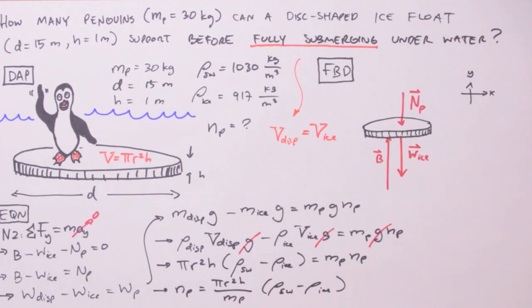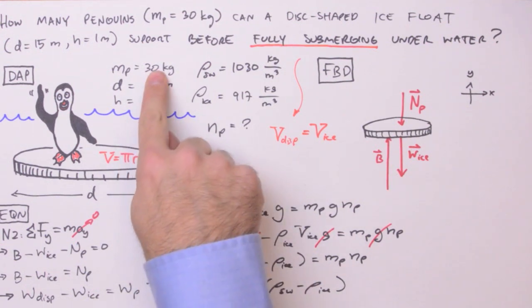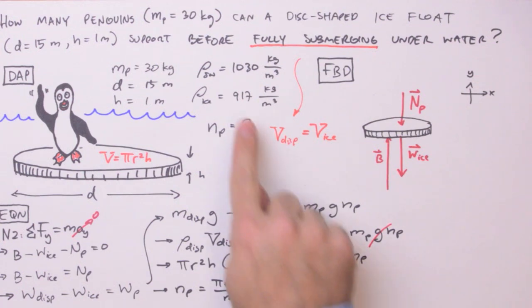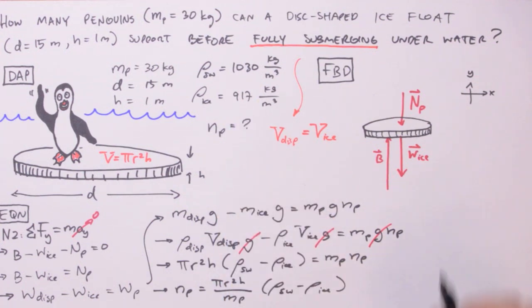Anyway, we have all the values we need to solve this problem now. We have the radius, just divide the diameter in half, we have the thickness of the ice float, and the mass of a single penguin, and the two densities associated with the problem. So all we need to do is plug this into a calculator.